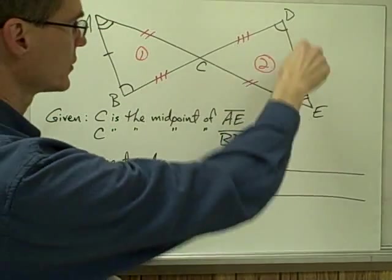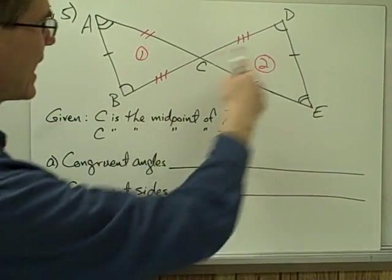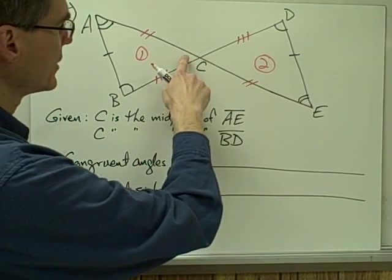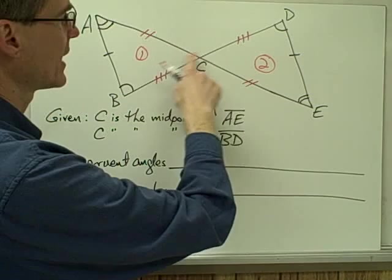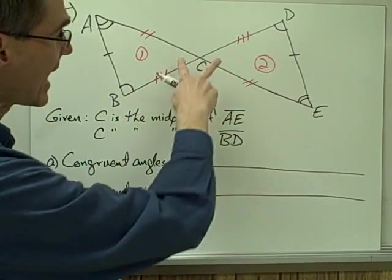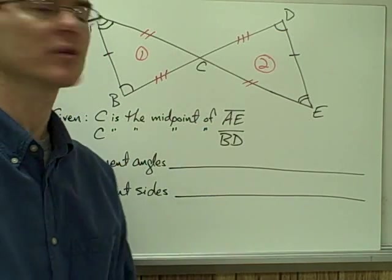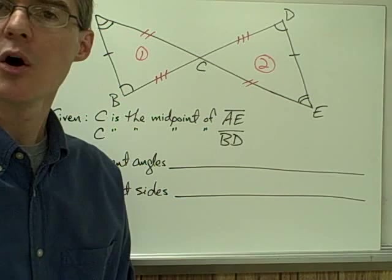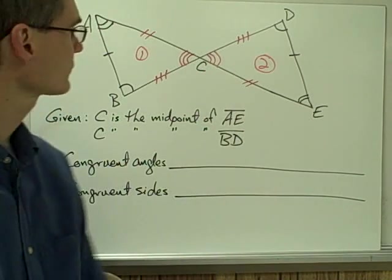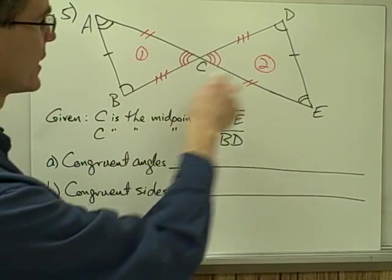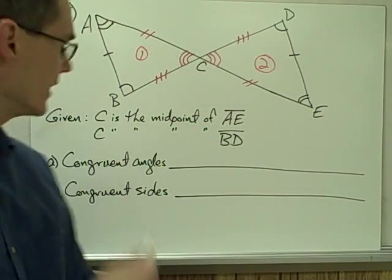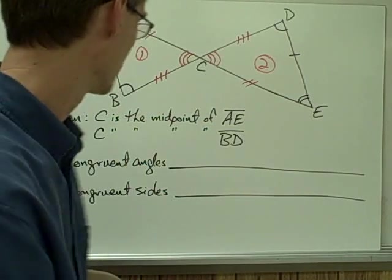Now I have all three sides of triangle number one congruent to all three sides of triangle number two. I still have only two angles matched, but there's one more thing I know — this pair of angles, the third angle on each triangle, form vertical angles. Vertical angles are always congruent, so this angle is congruent to this angle. Now I have all three angles and all three sides of triangle one congruent to triangle two, so these two triangles are congruent.